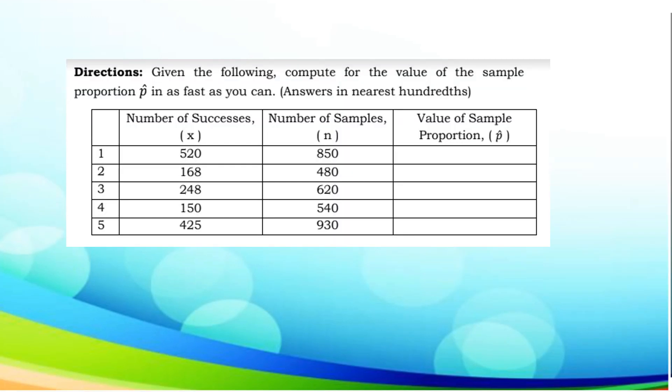Let's try another one. Given the following, compute for the value of the sample proportion or p-hat as fast as you can. Number 1: 520 over 850 is 0.61. 168 divided by 480 is 0.35. 248 divided by 620 is 0.40. 150 divided by 540 is 0.28. Lastly, 425 divided by 930 is 0.46.